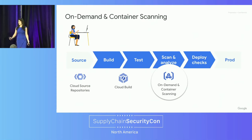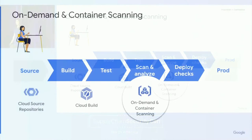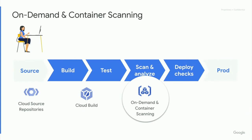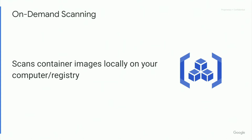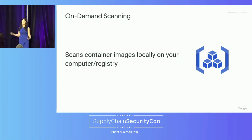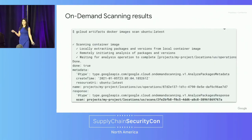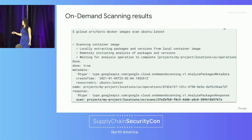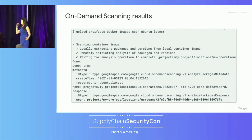Going down further, we have our scan and analysis stage — that's where my team comes in. On-demand scanning and container scanning are the two products my team owns. On-demand scanning allows you to scan container images locally on your computer or in a registry. What this looks like is a gcloud CLI command that allows you to scan an image — for example, Ubuntu latest locally on your computer — and it will extract packages, make sure all the analyses are run, and then display the results as you see here.